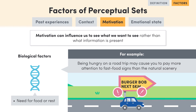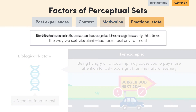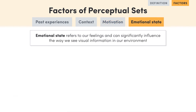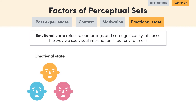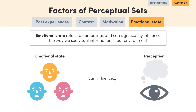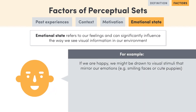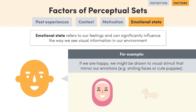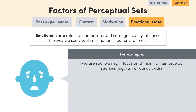So the last factor which can influence a perceptual set is our emotional state. Our feelings can play a big role in the way we see visual information in our environment. If we are feeling happy, we are drawn to visual stimuli that mirror our emotions, such as smiling faces and cute puppies. If we are feeling sad, then we may focus on visual stimuli that reinforce our sadness, such as rain or dark clouds.